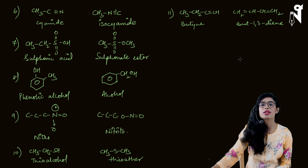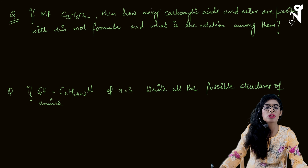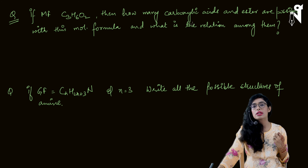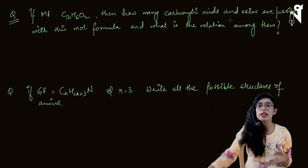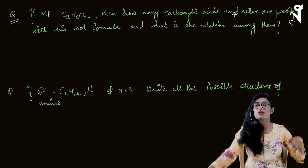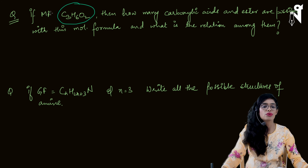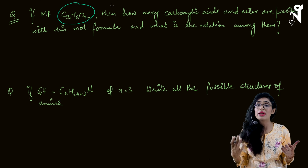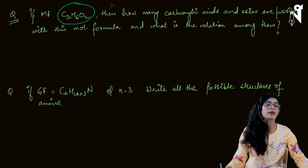Now let's solve some questions. First question: if the molecular formula is C3H6O2, how many carboxylic acids and esters are possible, and what is the relation among them? The first step is to find the DU. We know there's a carboxylic acid or ester, but we need to check for any additional double bonds or cyclic chains. DU = (C+1) − (H+X−N)/2.